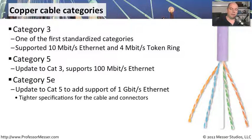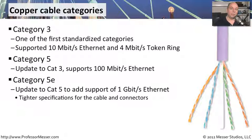Of course, our networks got faster. We started rolling out gigabit ethernet networks over copper, and we needed an even higher category. There was a small tweak to Category 5 called Category 5e, which enhanced the requirements so we could run 1 gigabit ethernet. This introduced a tighter specification for both the cabling and connectors.